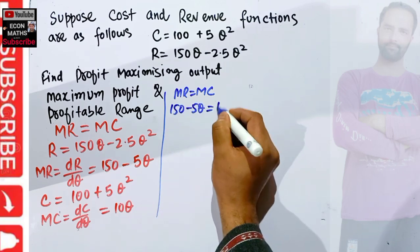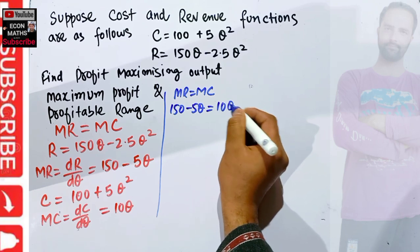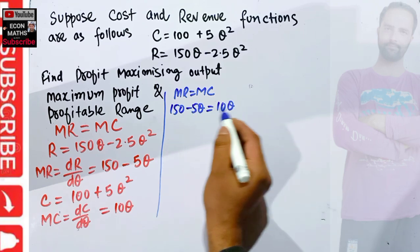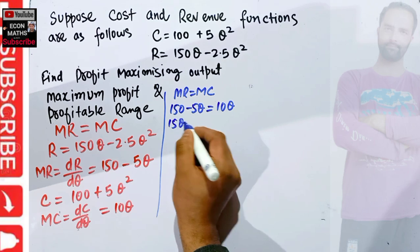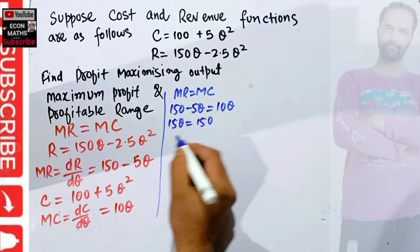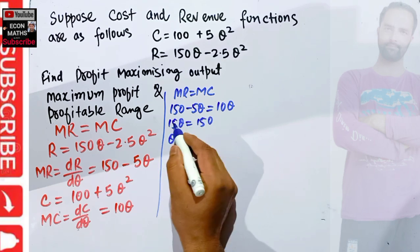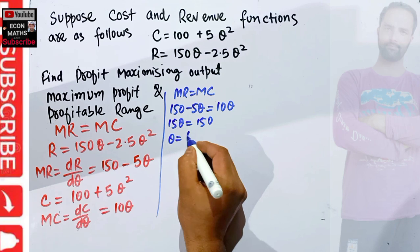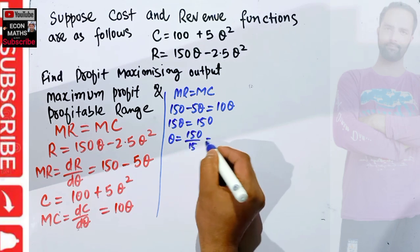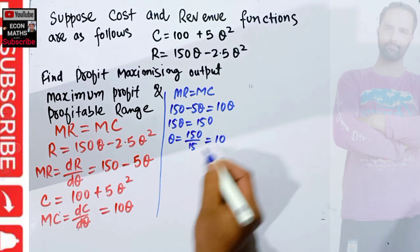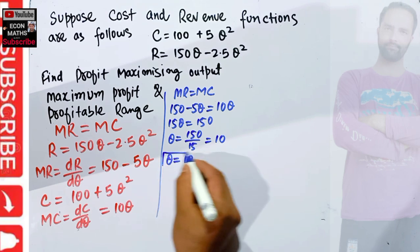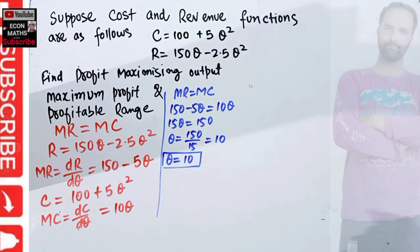Equating marginal revenue with marginal cost: MR = 150 − 5Q and MC = 10Q. Transposing gives us 15Q = 150, which implies Q = 150/15 = 10. Therefore, the profit maximizing level of output is Q = 10.